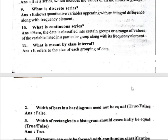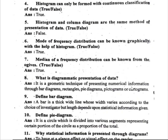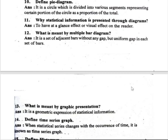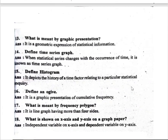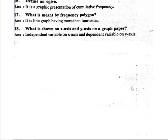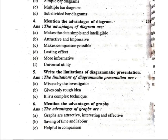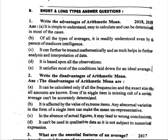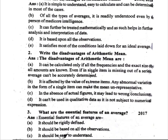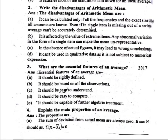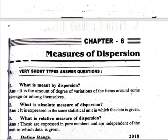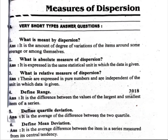Distinguish between primary and secondary data. What is the method of collecting primary data? Define the term classification. What is graphical classification? What is a statistical series? MCQ-type questions: what is a diagram, what is a pie diagram? What is a histogram? Question 3, 4: advantages of diagrams. Question 6: advantages of graphs. Write the advantages and disadvantages of arithmetic mean. What are the essential features of an average?